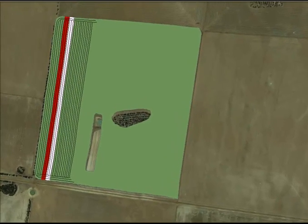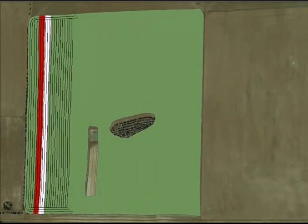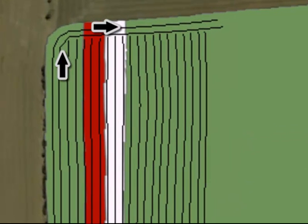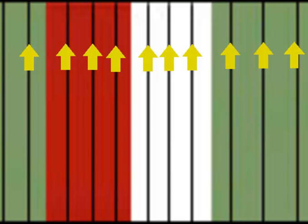The best way to get around the direction effect is to harvest the trial area all in the same direction. That means that you harvest up the trial, jump over several run lines, and harvest back down the paddock well outside the trial region. By doing this, all the run lines within the trial region are recorded in the same direction.